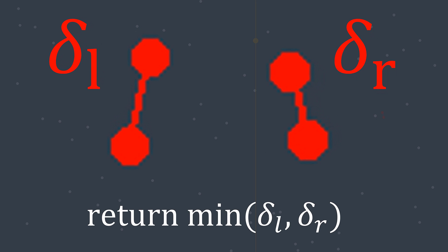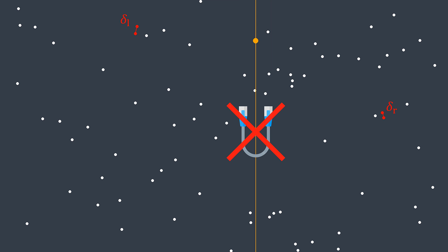You may think we just need to take the smallest distance among Delta L and Delta R and we're done. But no — what if the closest pair is actually made of one point from the left part and one point from the right part? Our current solution wouldn't detect it, because it searches in the left part only, then the right part only, without making the connection between them. That's the problem.